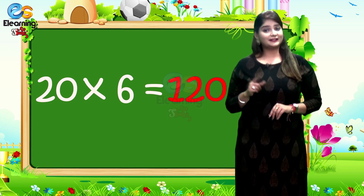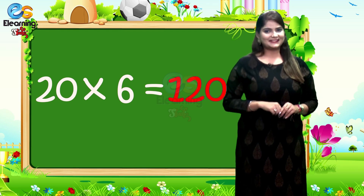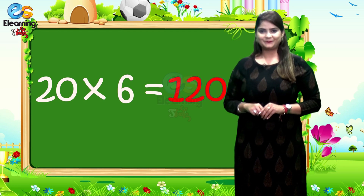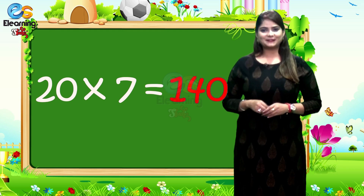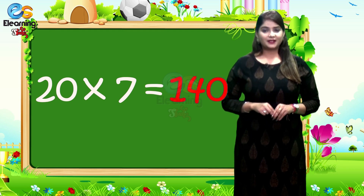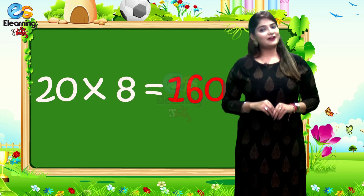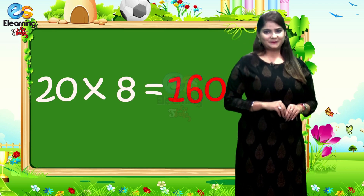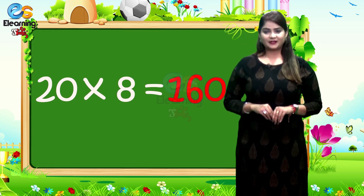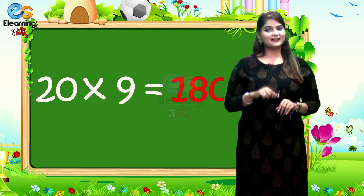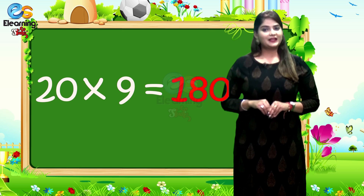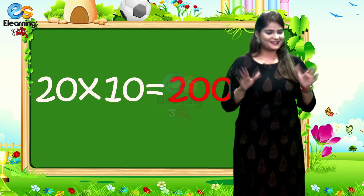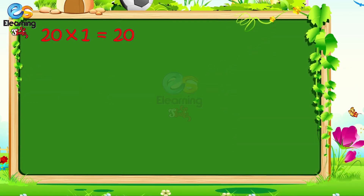20 times 6 is 120. 20 times 7 is 140. 20 times 8 is 160. 20 times 9 is 180. 20 times 10 is 200. 20 times 1 is 20.